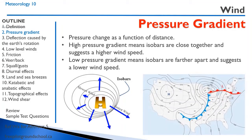Pressure gradient is defined as the change in pressure as a function of distance. A high pressure gradient means that the isobars are close together and suggests a higher wind speed. The isobars are lines joining places of equal barometric pressure. If we look at this weather map here, we can see these different isobars — they look like contour lines on a topographic map.